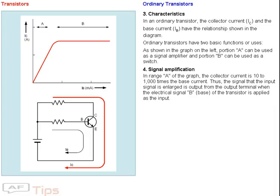Signal amplification: In the A range of the graph, the collector current is 10 to 1000 times the base current. Thus, when the electrical signal of the transistor is applied as the input, the input signal is enlarged and output from the output terminal.